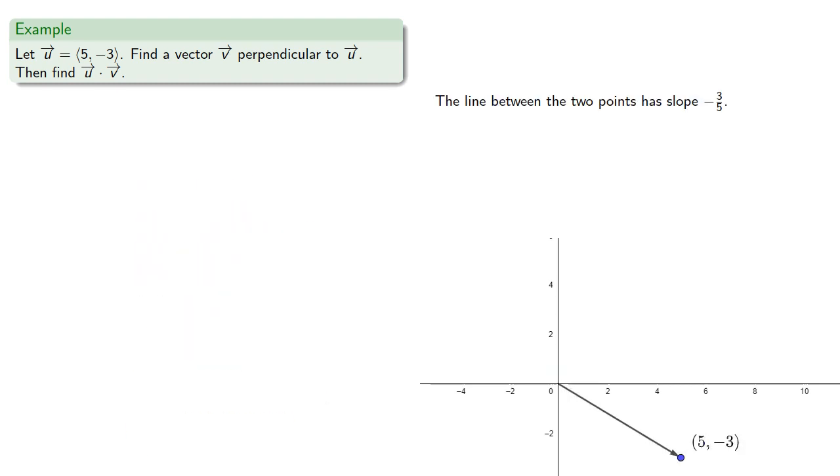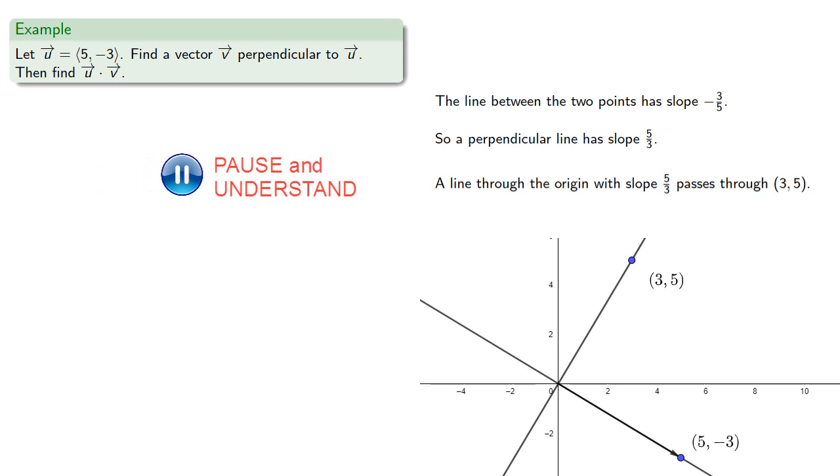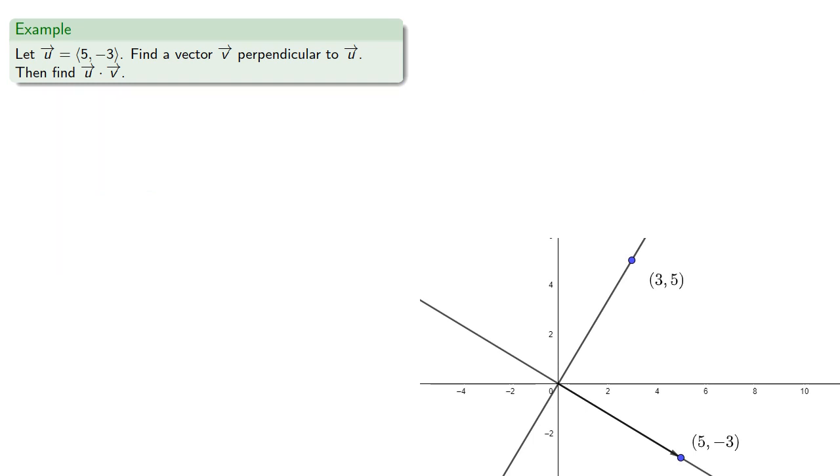Now, the line between the two points has slope. So a perpendicular line has slope. Now, if I run a line through the origin with slope it will pass through the point. And so a vector running in the same direction as this perpendicular line will be.